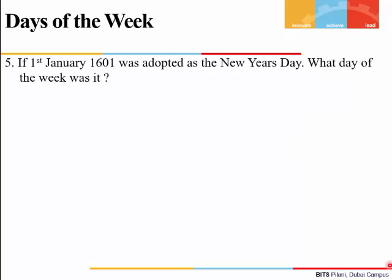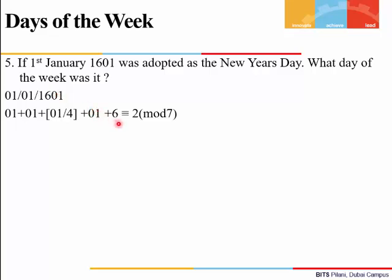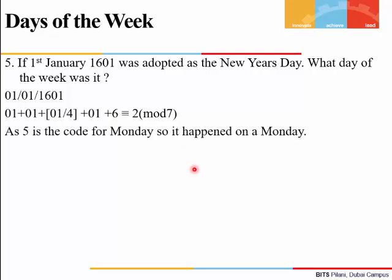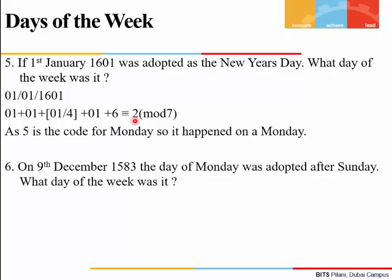Example 5: 1st January 1601 was adopted as New Year's Day. Since the year is in the 1600s, the correction is c = 6. Applying the formula, the result is congruent to 2 mod 7, so it was a Monday.